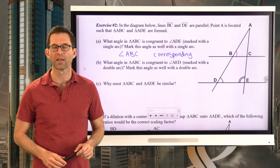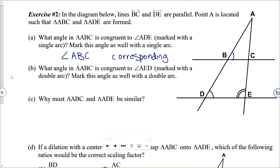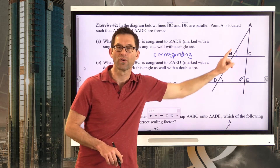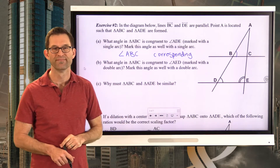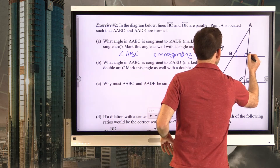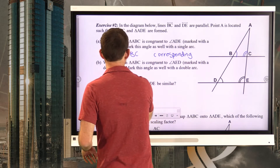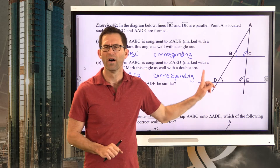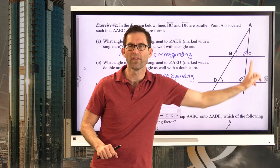Letter B: what angle in triangle ABC is congruent to angle AED, marked with a double arc? Mark this angle with a double arc as well. Again it's corresponding angles. That angle, which is angle ACB, is congruent to angle AED because it's corresponding — they're both in the upper left-hand corner when these two parallel lines are cut by the transversal.